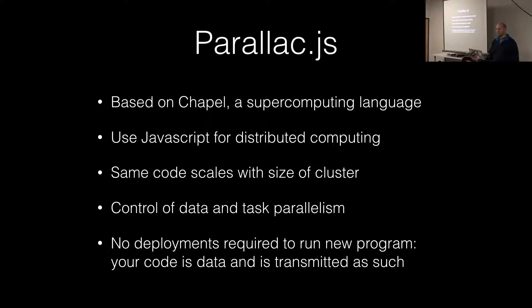There are a couple features that I thought would be pretty neat to implement. With Chapel, you can write your code once and then it scales depending on how many servers you give it — you can run it on your laptop or on a supercomputer. Chapel also gives you fine-grained control over data parallelism and task parallelism, so you can spread your data and tasks across multiple machines in interesting ways. Node and JavaScript also give you dynamic compilation or dynamic evaluation, which is a very Lispy type feature.